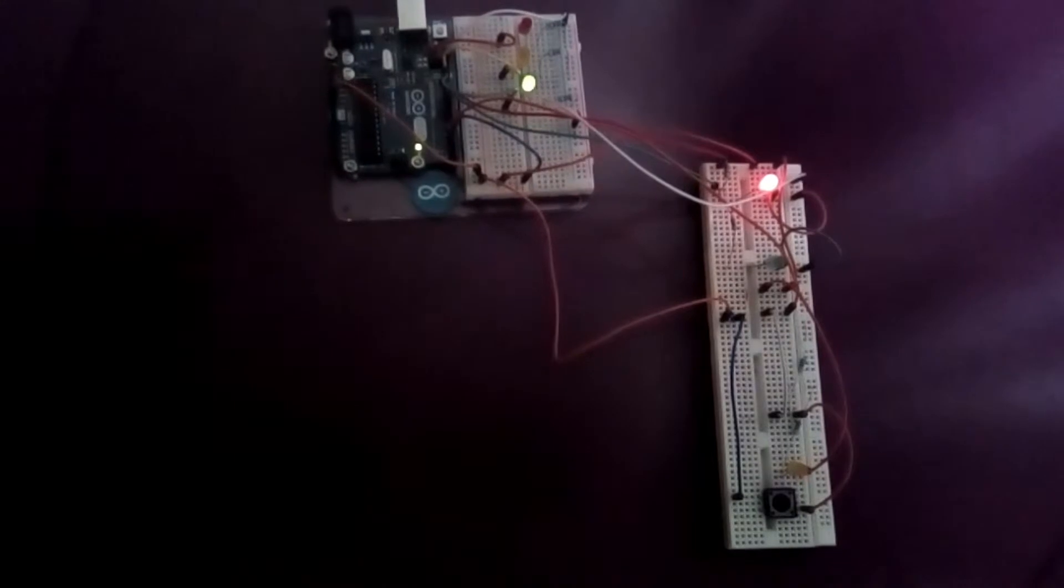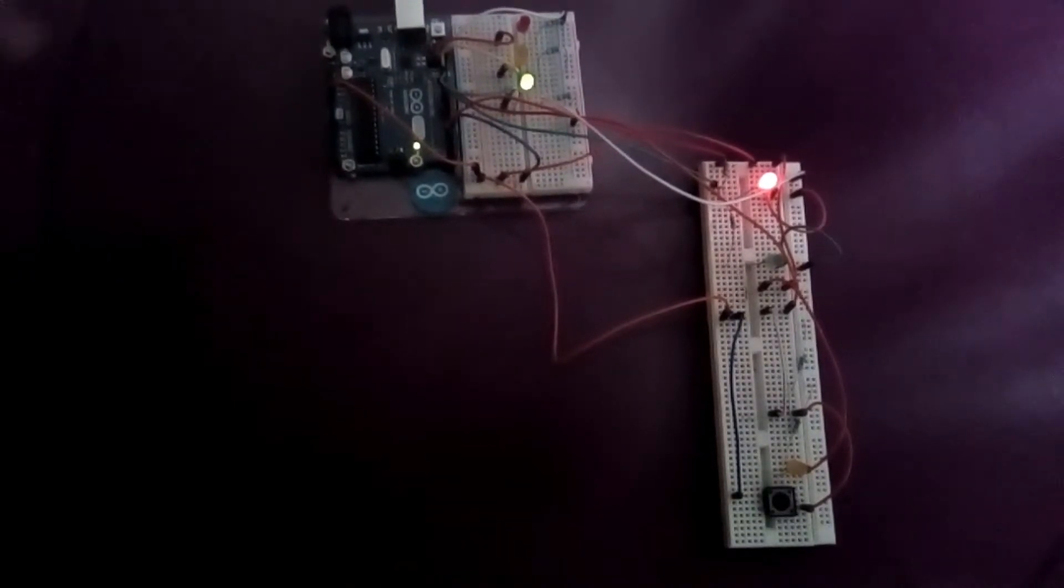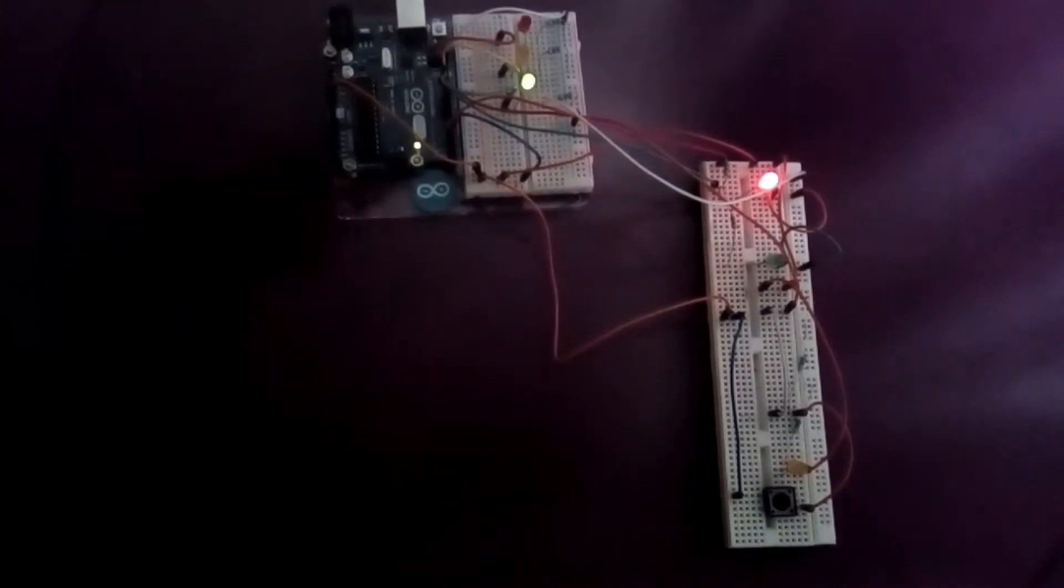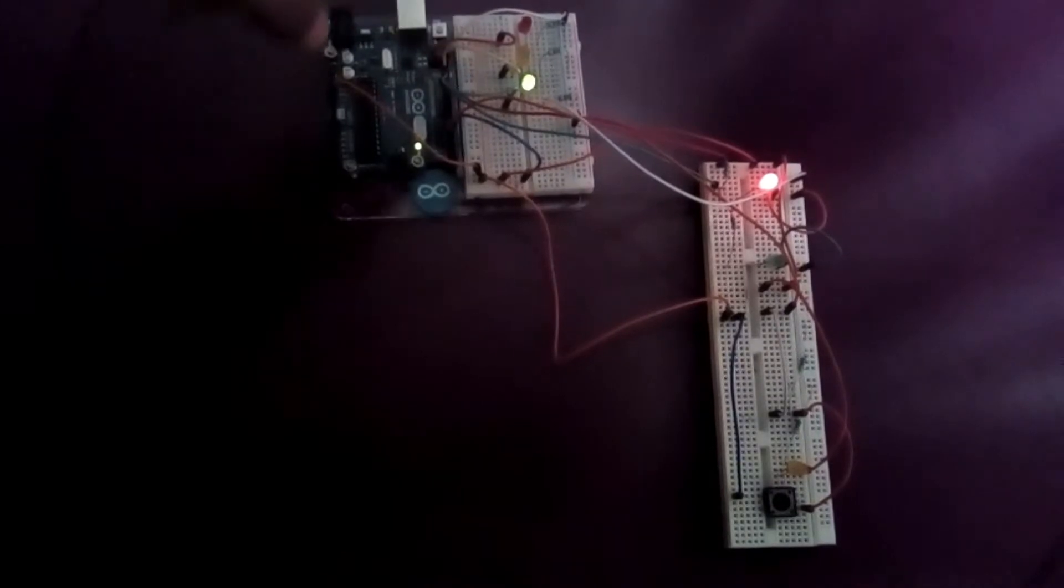And this is what I've created. This is my Arduino traffic signal system. So the smaller breadboard is the driver's side and it has three lights: the red, yellow and green.